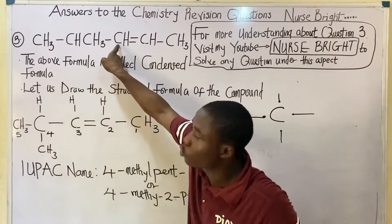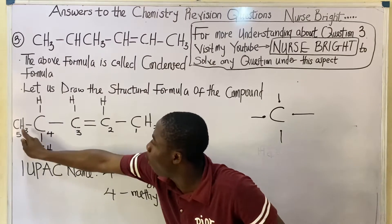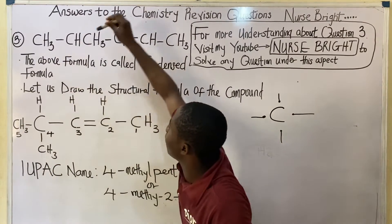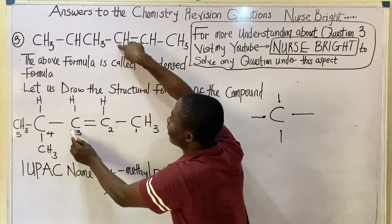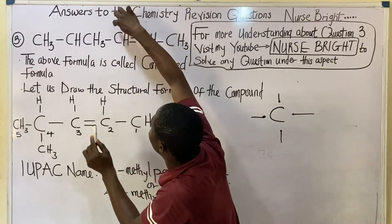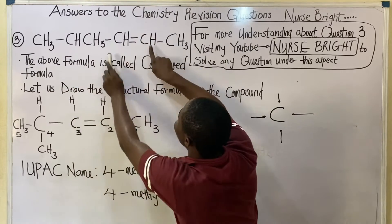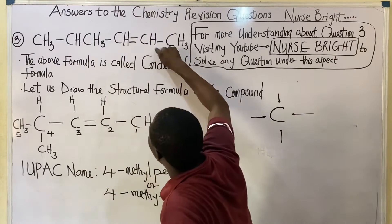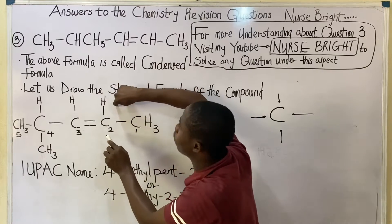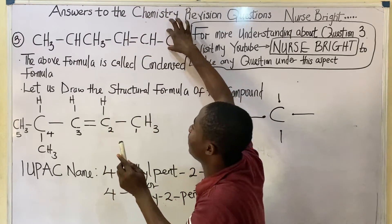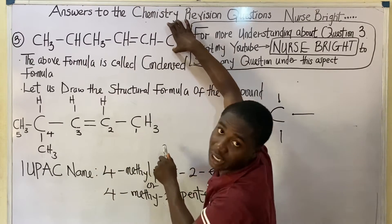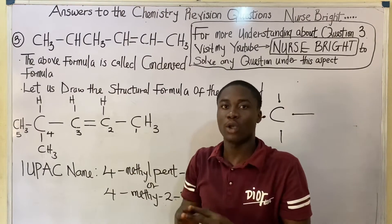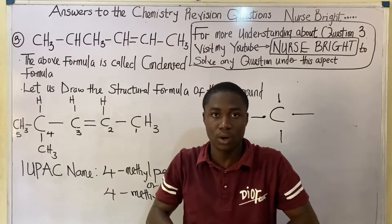Lastly, this same carbon bonds with the next carbon in the chain, completing its four bonds. That next carbon atom is connected to a hydrogen going up. These two carbons are held together by a double bond. This hydrogen is bonded to that carbon, and finally this same carbon bonds with a CH₃ group at the end. The structural formula is now complete.